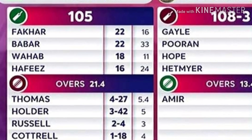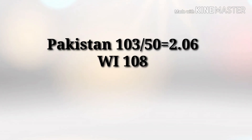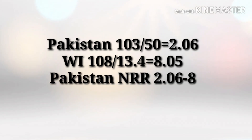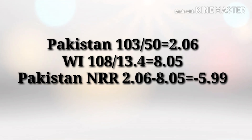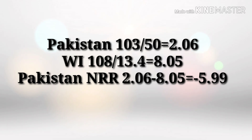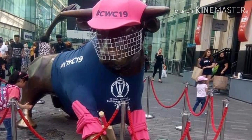In the same World Cup, against West Indies, Pakistan were bowled out in 21.4 overs and scored 103 runs. Because of this rule, 103 is divided by 50 since it was a 50-over game — so 103 divided by 50 equals 2.06, giving Pakistan an average of 2.06. West Indies then chased those runs in 13.4 overs, scoring 108 runs, giving an average of 8.05. So 2.06 minus 8.05 equals minus 5.99 for Pakistan.